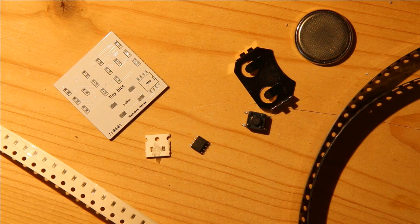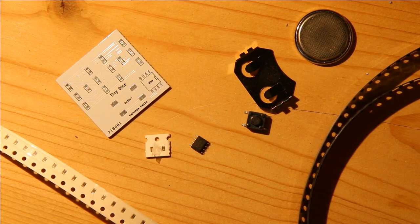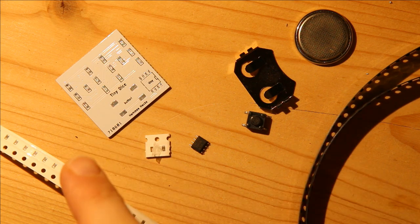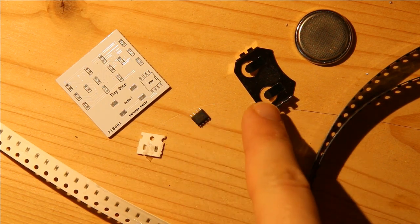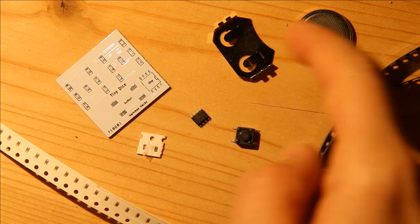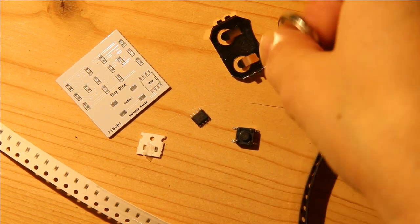In this video, I'm going to be soldering together the tiny dice. And to do that, I need LEDs, resistors, a capacitor, an ATtiny13A, a button, a coin cell holder, and a coin cell.